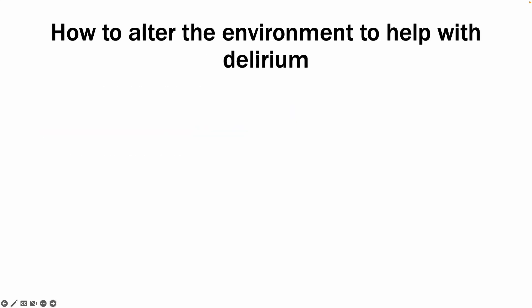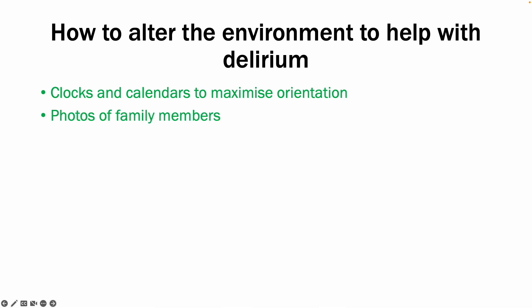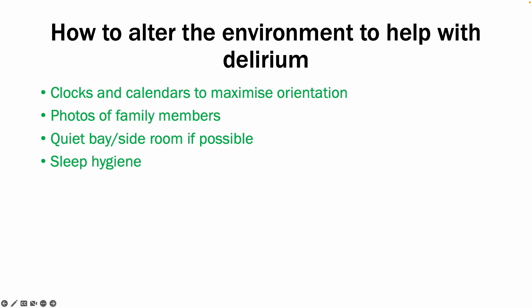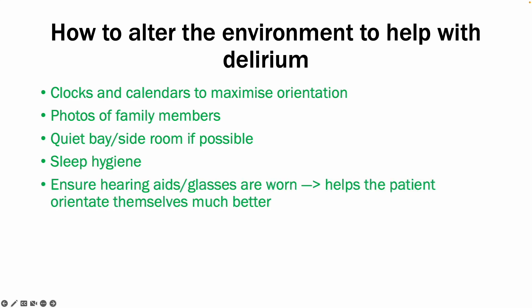Lastly, it is important to alter the environment to help with delirium. You can add clocks and calendars to help patients with orientation, have photos of family members around if possible, and put them in a side room if available. Maintain sleep hygiene and ensure that if a patient requires glasses or hearing aids, they have them — as being unable to fully orientate themselves can exacerbate or precipitate delirium in the first place.